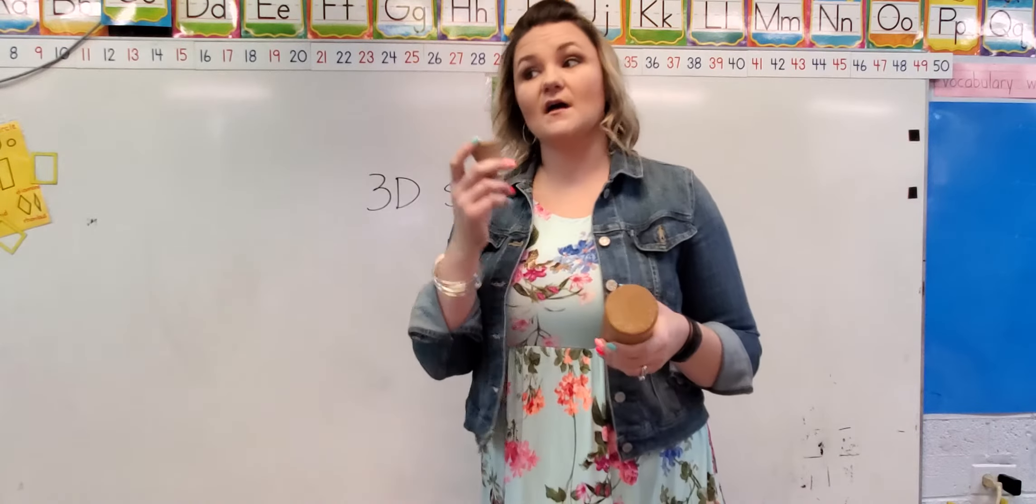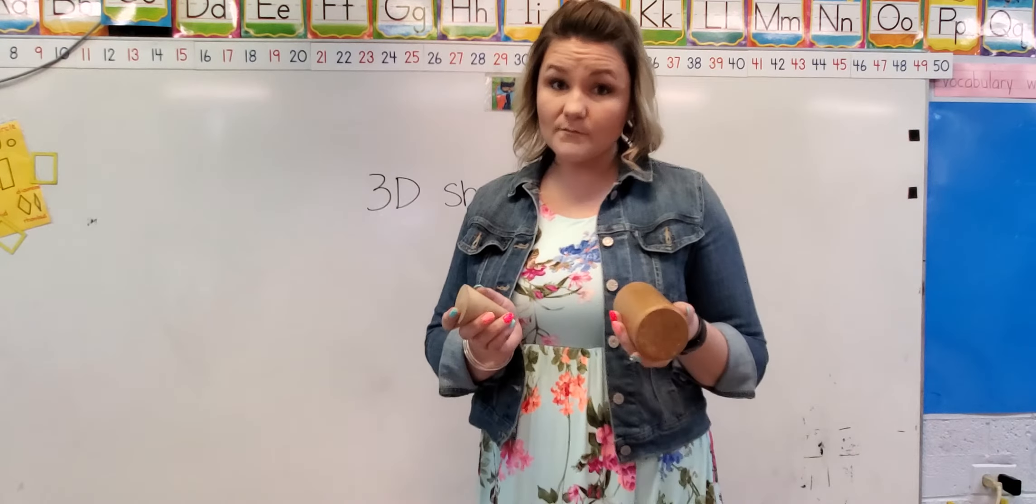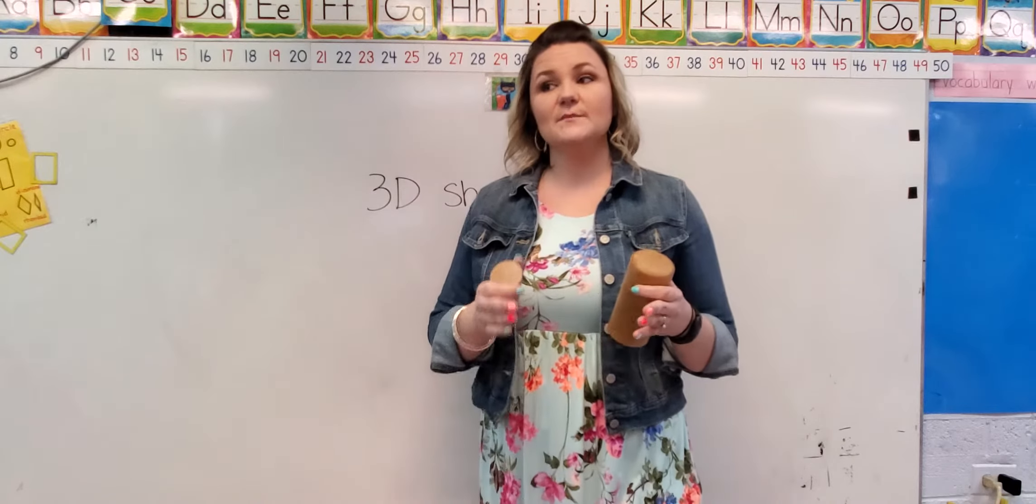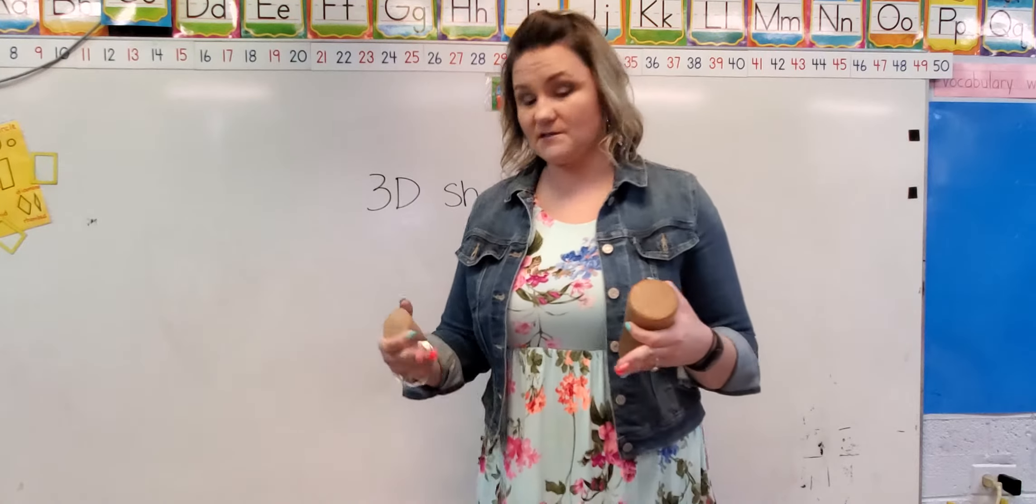They're different because a cone has one, a cylinder has two. They're also the same because they both can roll. You're looking for them to make connections between what is the same about two shapes and what is different.